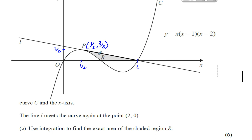We've got to find the area of this shaded region, which is underneath the line, above the x-axis and above the curve. Now, integration tells us how to find the area under a curve between the curve and the x-axis. But here the area is above the curve, so that's not going to help us in a direct sense. What we could do is the following.